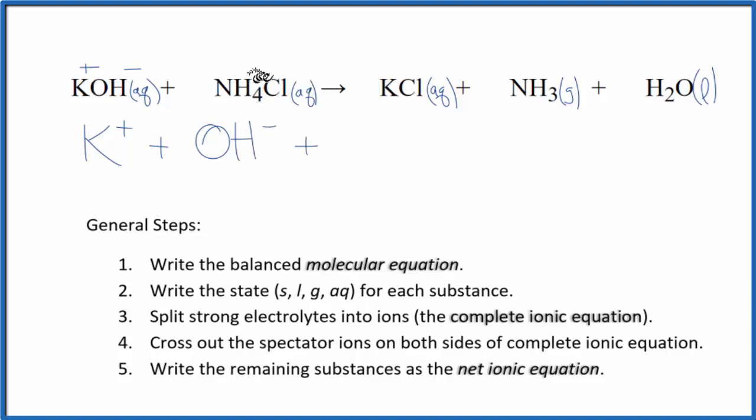For the ammonium chloride, ammonium ion, a good one to know, always has a one plus charge, chloride, one minus. So we have NH4 plus, that's our ammonium ion, plus the chloride ion, Cl minus. So those are the reactants in our net ionic equation.